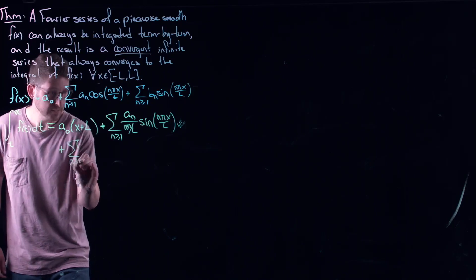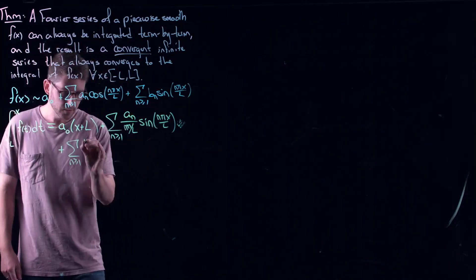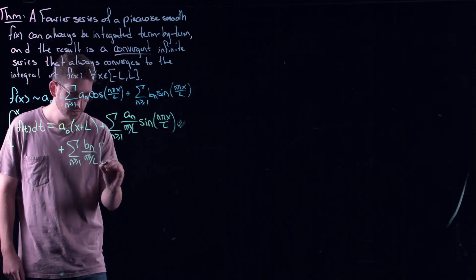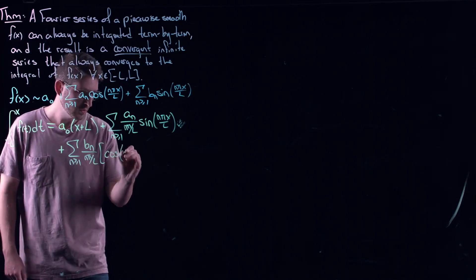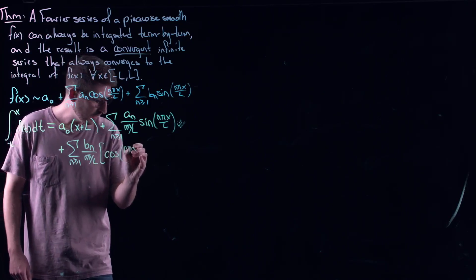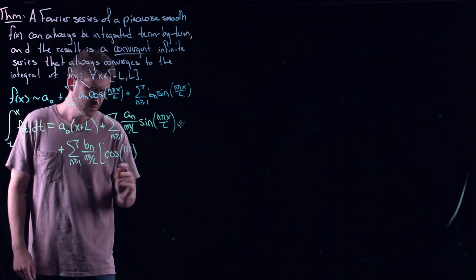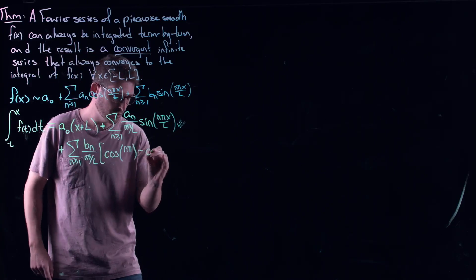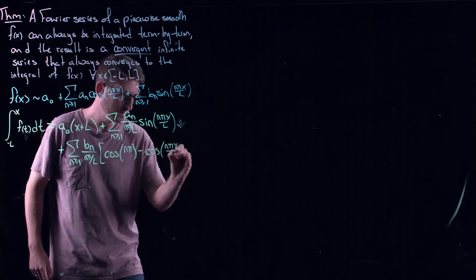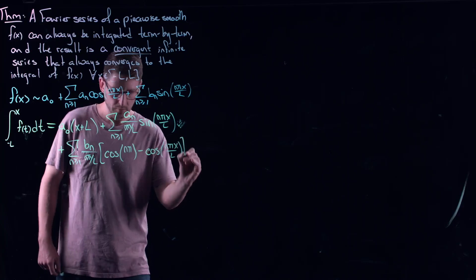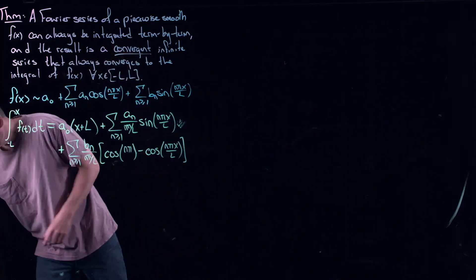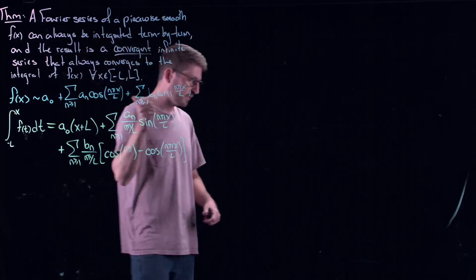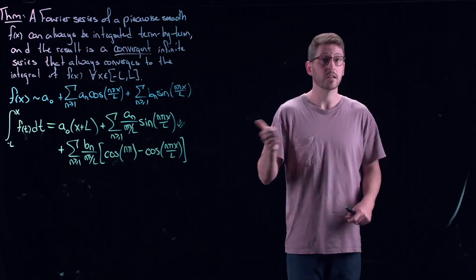Plus the sum — if I take the anti-derivative of the sine terms, you're going to see b_n over n pi over l, and then minus cos of n pi x over l, with the evaluation at l. Now, notice there's a linear term in here from integrating the constant a_0, so it's not a Fourier series anymore — it doesn't have just sines and cosines.